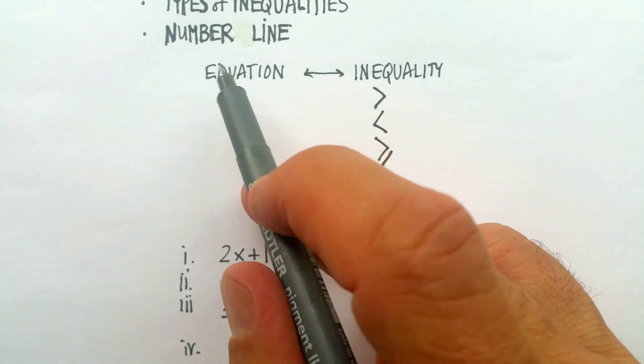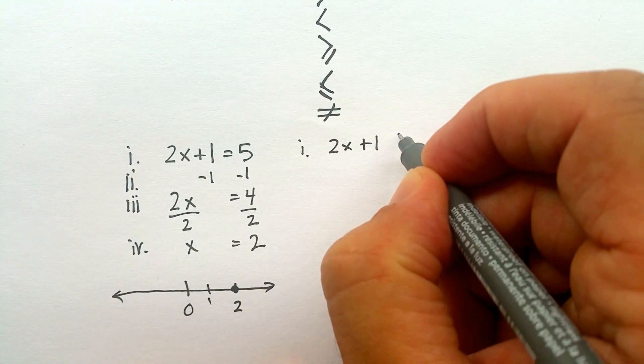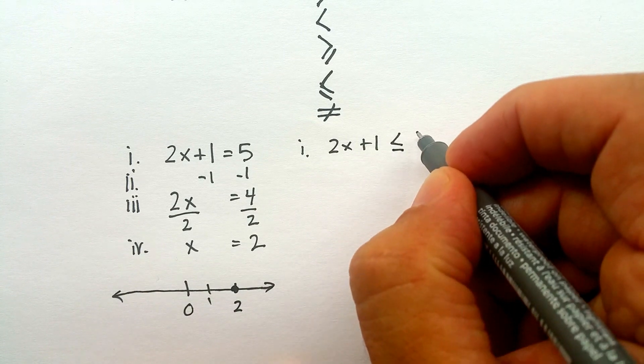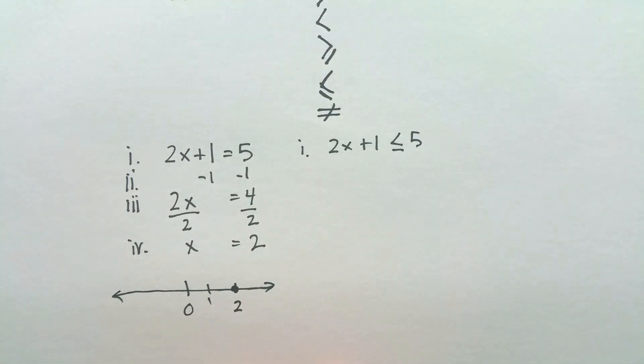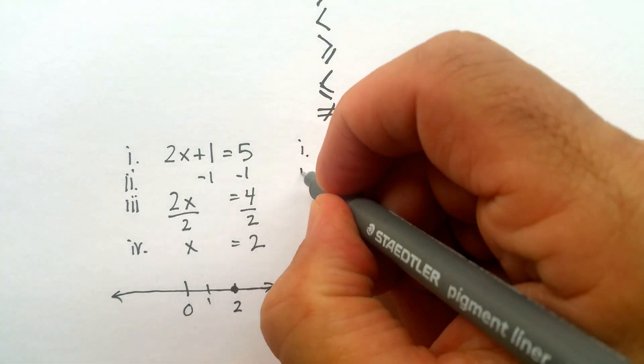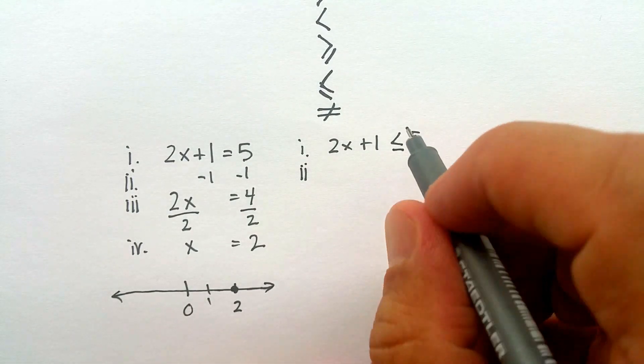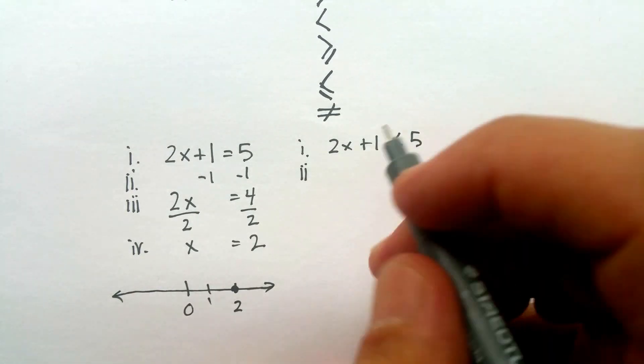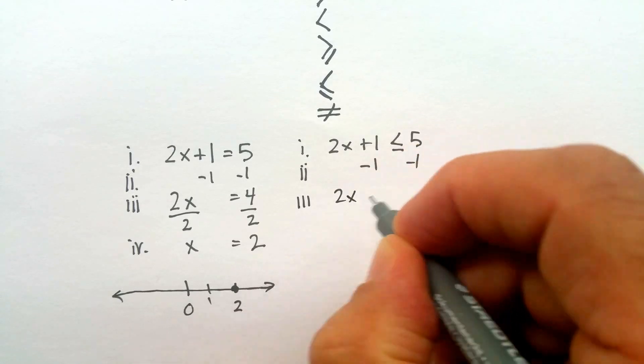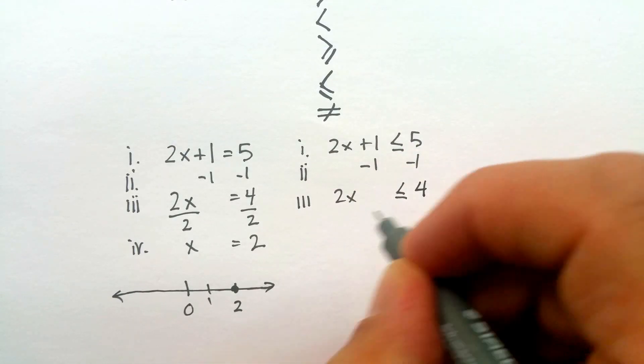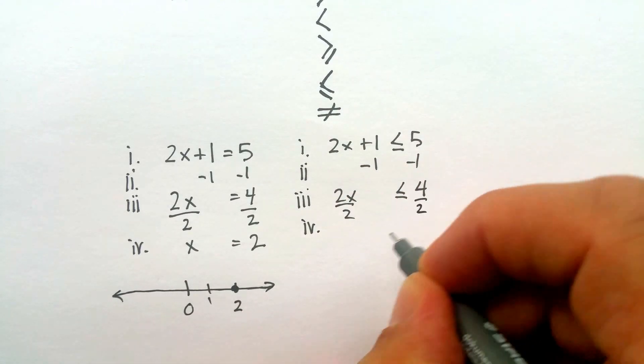Now with an inequality it's going to look a little different. Let me show you how it would look on a number line. Let's say I have 2x plus 1 less than or equal to 5. Now I'm not going to do anything different in terms of how I go about solving this problem. I'm going to pretend that that inequality is not there, I'm just going to use an equal sign. So let me subtract 1 from both sides. I'm going to come up with 2x is less than or equal to 4.